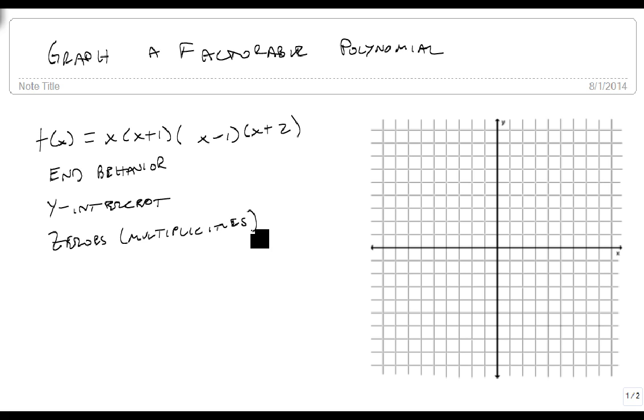So we're going to look at end behavior first. When we have a term like this, we just look at the leads of all of them, and we multiply these all together, and we get a positive x to the fourth. So the end behavior is positive as x approaches infinity. And since it's even, it's also positive as x approaches minus infinity. So it's going to be positive over here and positive over here for end behavior.